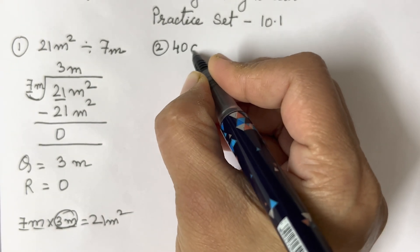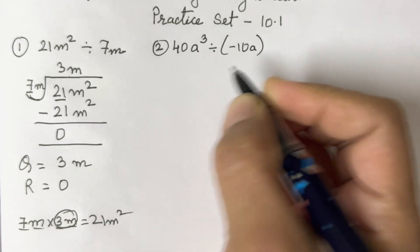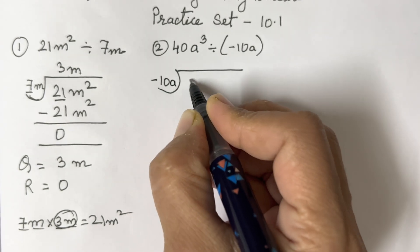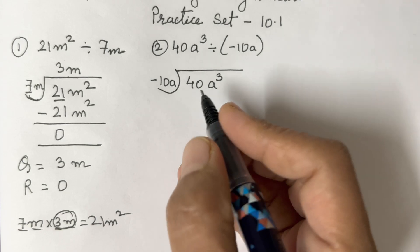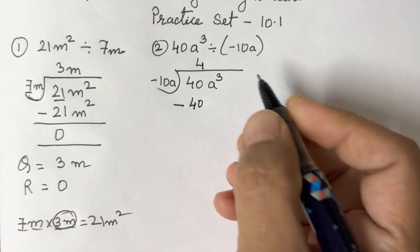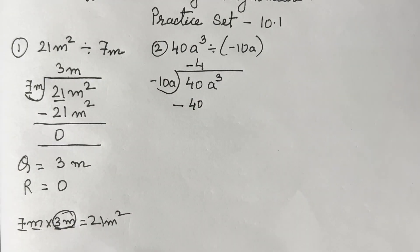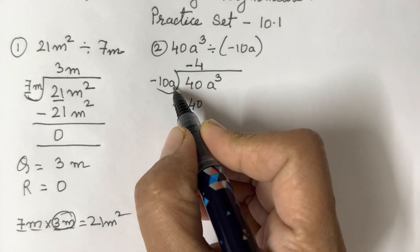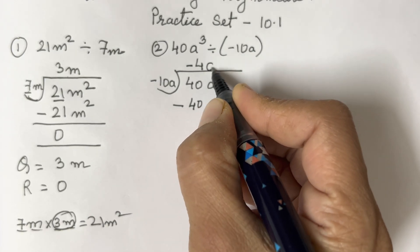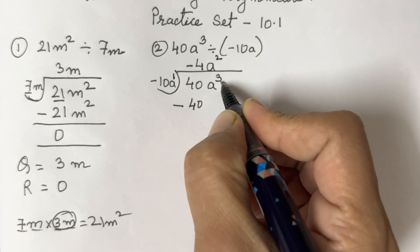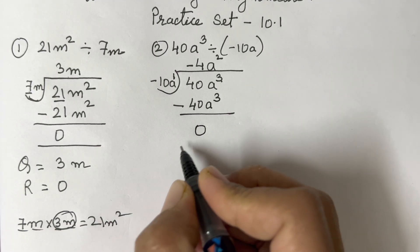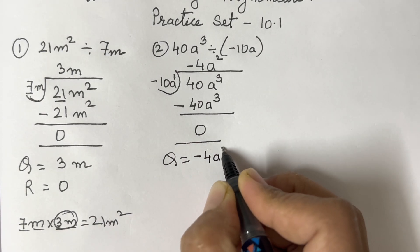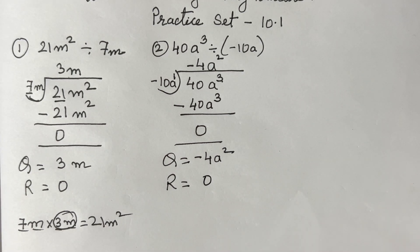The next sum is 40a³ divided by -10a. Set up the division: divisor -10a, dividend 40a³. Do it mentally first — in 10's table, 40 comes as 10 fours are 40. Remember the minus sign must be included. For the variable, a is there and we need a³, so a² must come here since 1 + 2 = 3. Your quotient is -4a² and your remainder is 0.